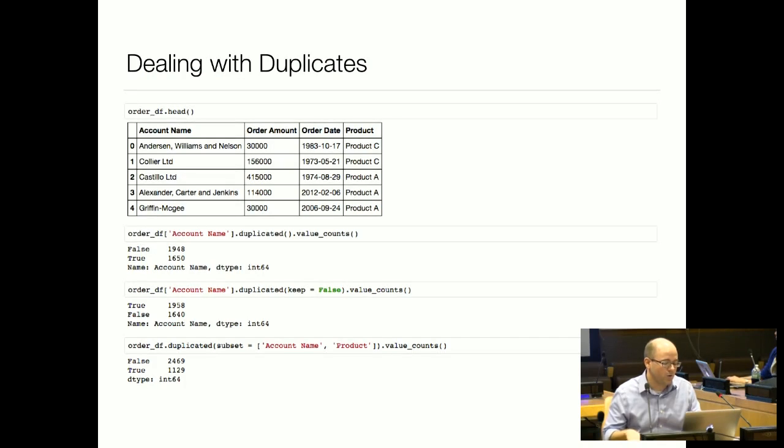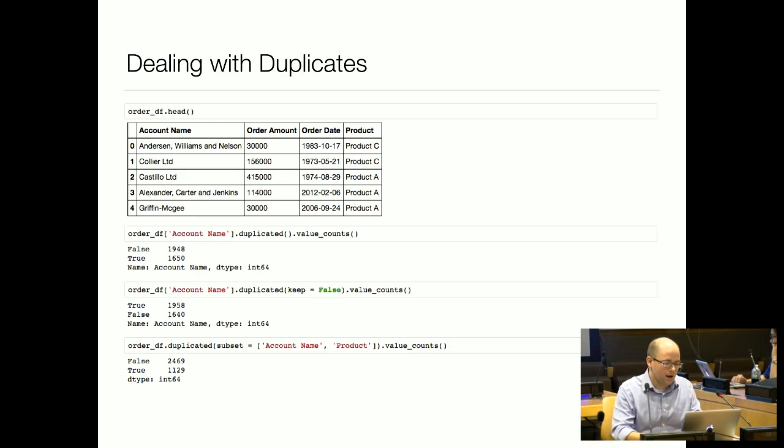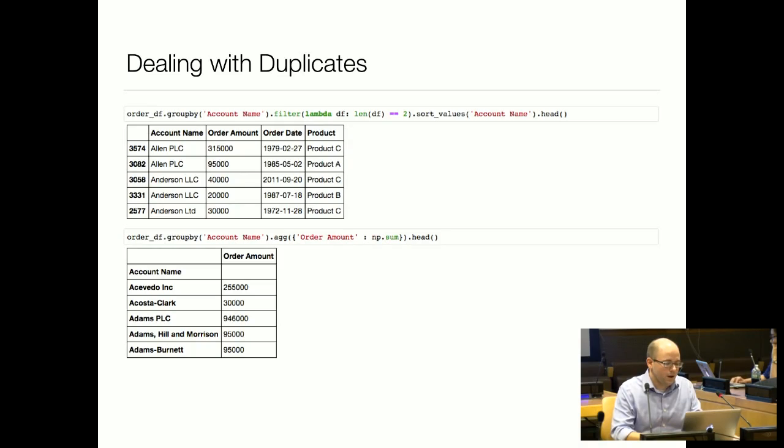We can also use the duplicated method on a DataFrame, not just on a Series. By default it looks for every single column in that row being part of a duplicate group, but we can define a subset of values to look at for duplication. Here I've defined the subset of account_name and product, so we only get those rows where both the account_name and the product are part of a duplicate group. The number of duplicates identified that way is lower, which makes sense.